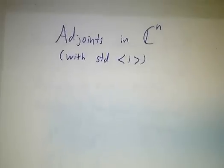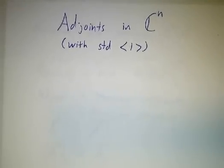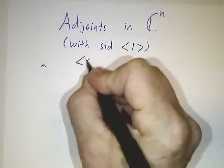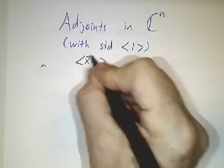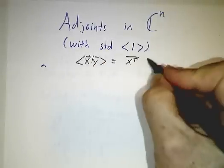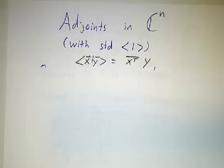We have Cⁿ with the standard inner product. Well, the standard inner product for Cⁿ is that the inner product of x with y is x-transpose conjugate times y. So there's got to be a conjugacy in here.